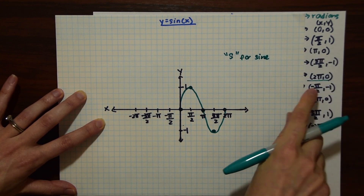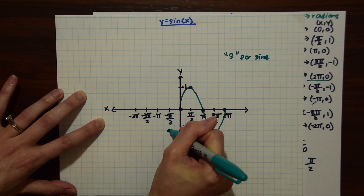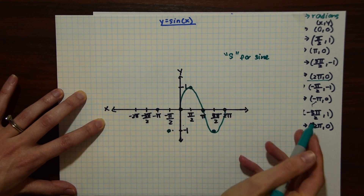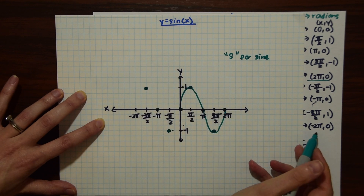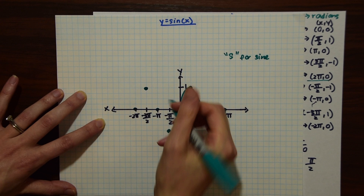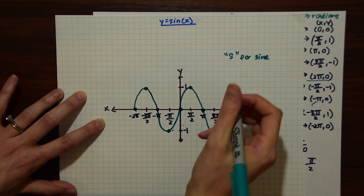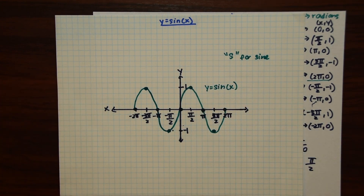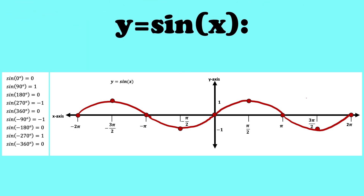Now let's graph the negative values. We have (-pi/2, -1), (-pi, 0), (-3pi/2, 1), and (-2pi, 0). Let's connect our dots on this side as well — and notice it also has that S shape. Let's label our graph y equals sine of x. Here's a close-up of all the radians and our y equals sine of x function just in case you missed anything.